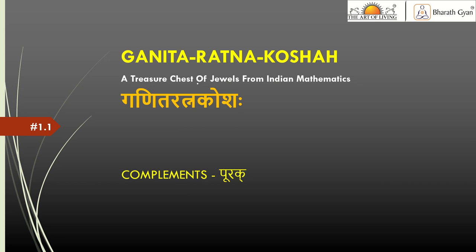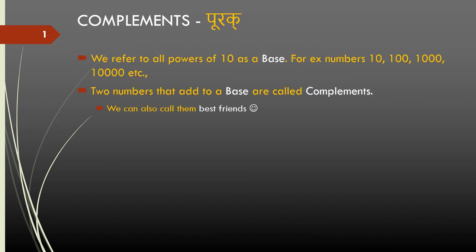One of the first techniques we will see is for calculating what are called complements. Complements, as the name suggests, are two numbers that are complementary to each other. In this context, we will refer to all powers of 10 — that is numbers like 10, 100, 1000, etc. — as base numbers. Two numbers that add to a base are called complements.